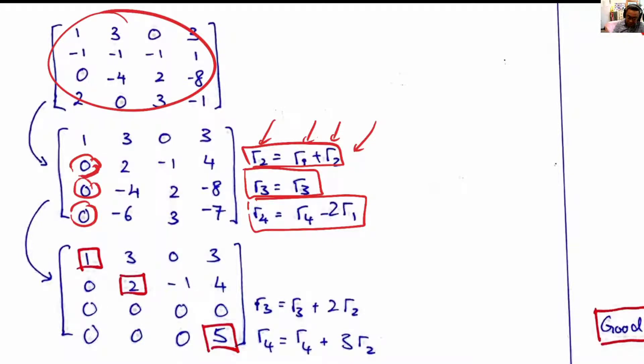In the first pass, we have introduced zeros below the first pivot. We then have the next pivot, which is the second row below the first non-zero, and then we again try to get rid of the values below the second pivot and make them zero, which are the operations here.